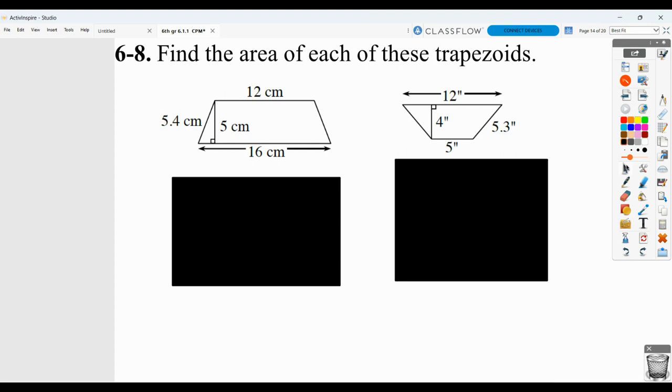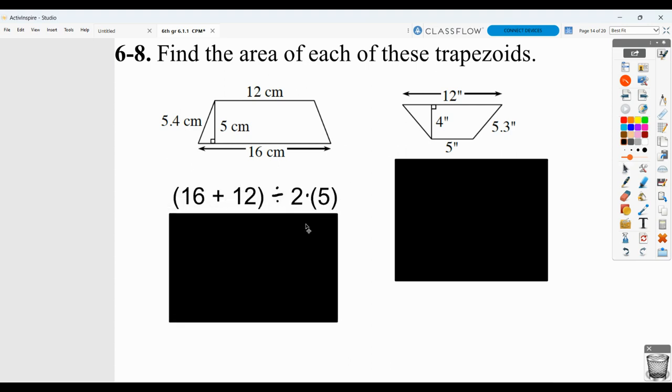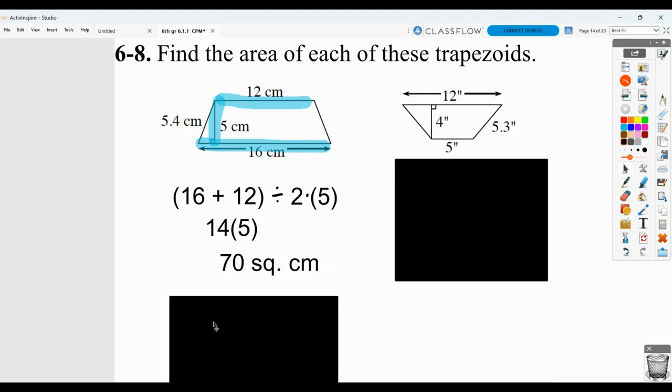Here you have to find the area of the trapezoids. Make sure you're writing down your formula. So for an area of a trapezoid, it's base one plus base two, or this could be base one and this could be base two. Then you're going to divide by two and then multiply by a perpendicular height. So that's where I got these from. And then you should show your answer.